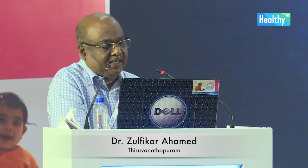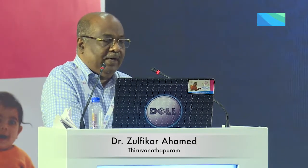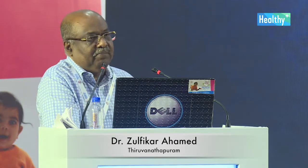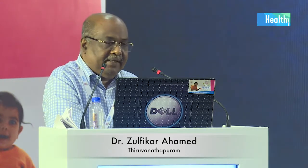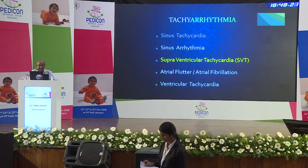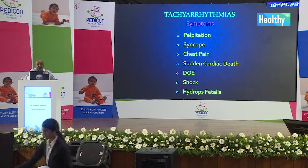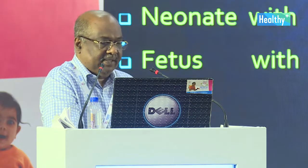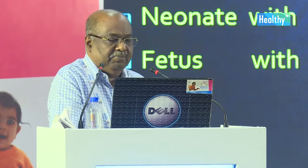Arrhythmias can have a two-phase nature — like one of our Batman movies. You can have a slow arrhythmia or a fast arrhythmia, and the rhythm can be either regular or irregular. A slow arrhythmia is called a brady arrhythmia — we will discuss only atrioventricular block. The major, more dangerous category is tachyarrhythmia, ranging from sinus tachycardia to supraventricular tachycardia, and less commonly atrial flutter, fibrillation, and ventricular tachycardia. Symptoms include palpitation, syncope, chest pain, sudden cardiac death, dyspnea, heart failure, shock, or even hydrops fetalis in fetal tachycardia.